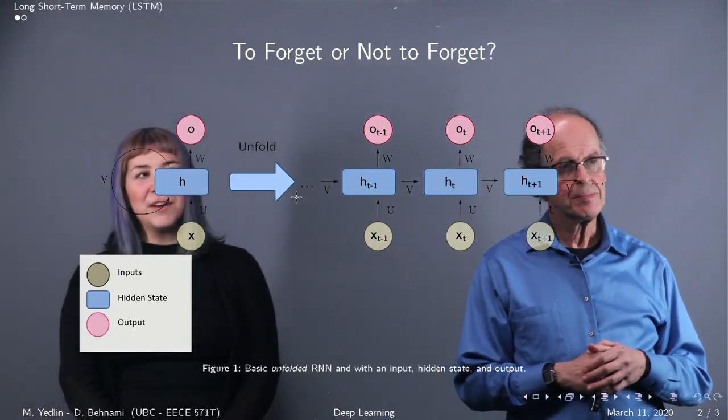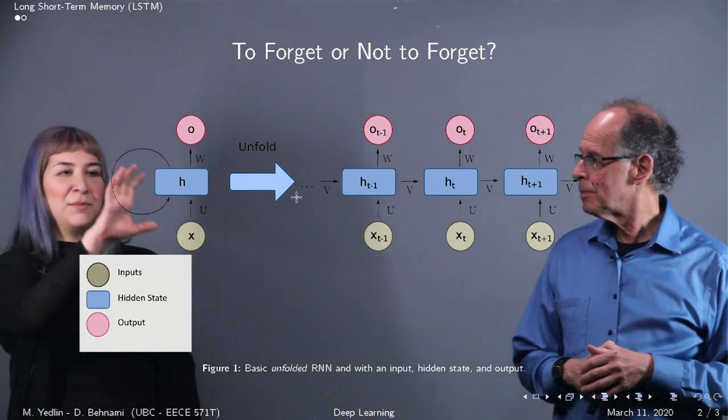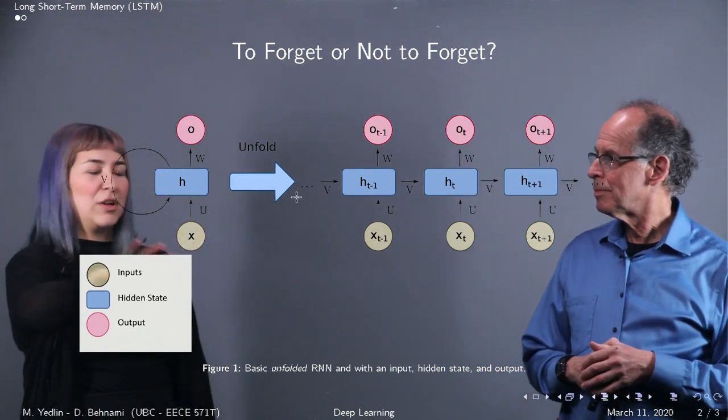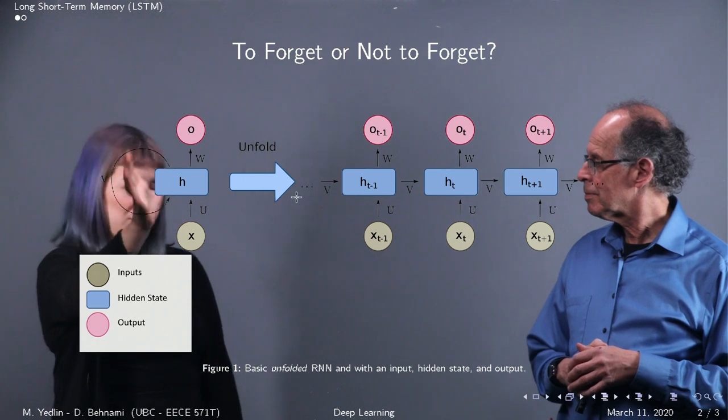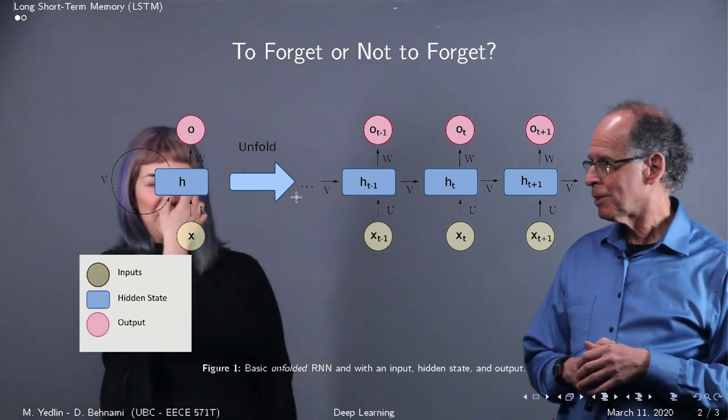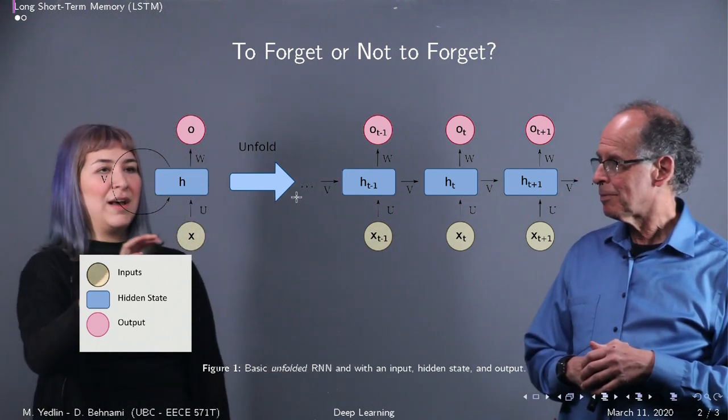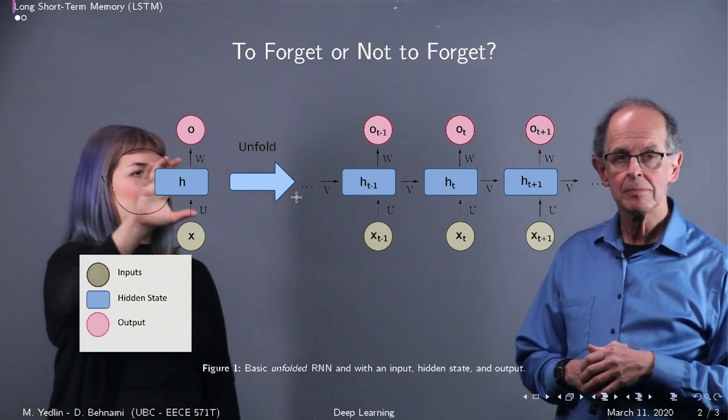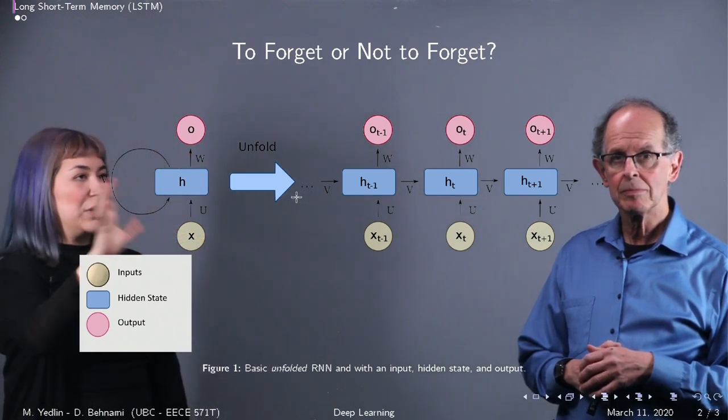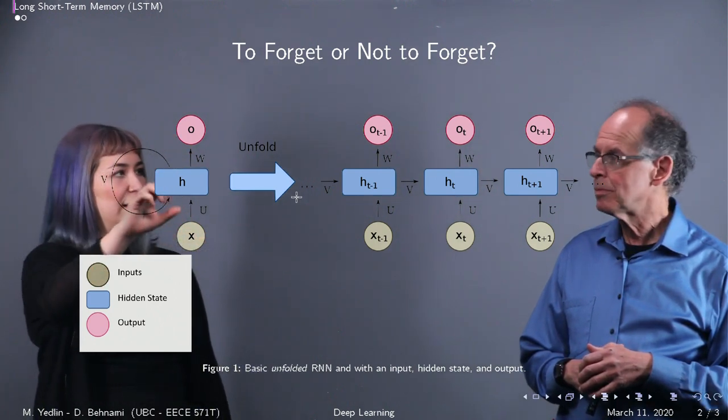So far we've talked about the simple RNN, the unfolded and compact version, the folded version, as well as the unfolded one. We mentioned how there's inputs, outputs, and a hidden state, and that's really the only thing that we have in this architecture, that hidden state.